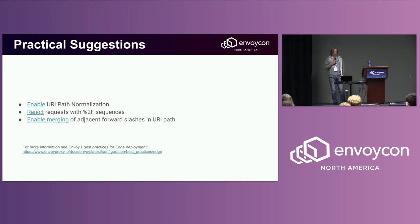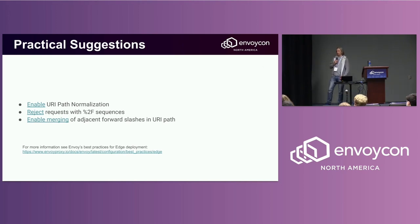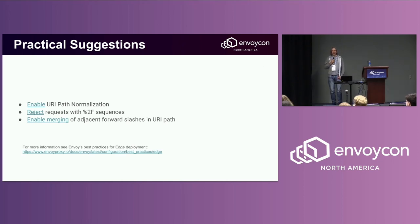There are practical suggestions that can improve security considerably. The first is simply enabling the path normalization option in Envoy. The option is off by default — we're changing that in the future.